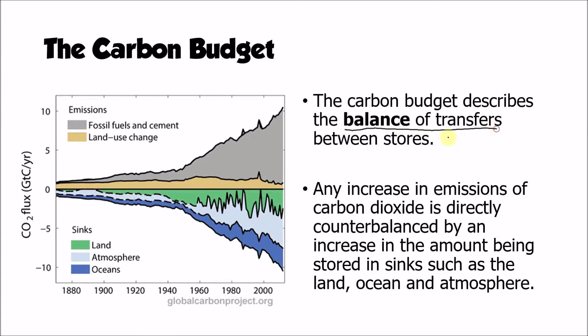We're really thinking about the balance between emissions or sources of carbon versus the sinks of carbon that exist. The graph on the left hand side of the screen shows us how those emissions, those sources and those sinks have changed over time.